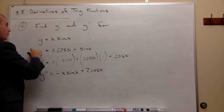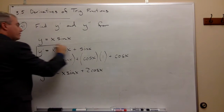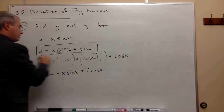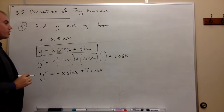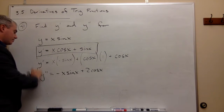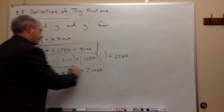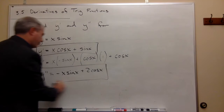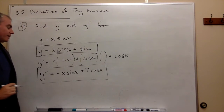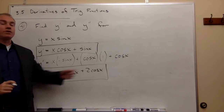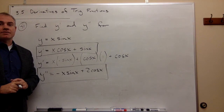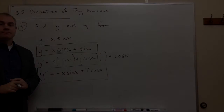So my first derivative is x cosine x plus sine x, and my second derivative is negative x sine x plus two cosine x. So that's it.